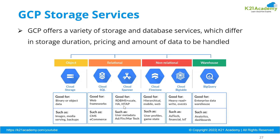Cloud Spanner is Google's own product — a hybrid transactional and analytical processing (HTAP) relational database with horizontal scaling. Cloud SQL gives you flavors like MySQL, PostgreSQL, and Microsoft SQL Server.